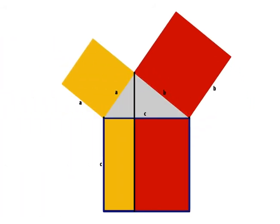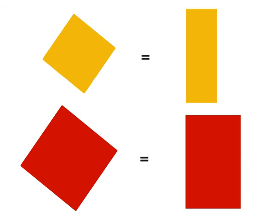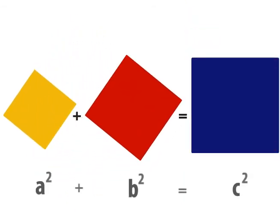Now that we know A² is equal to the left rectangle and B² is equal to the right rectangle, we can add the two together to arrive at our original theorem. A² plus B² is equal to C².